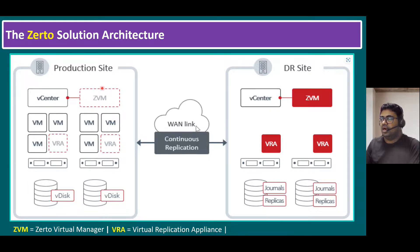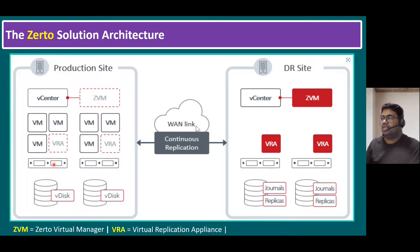The first one is how to install Zerto Virtual Manager on Windows Server. The second one, we talked about the virtual replication appliance — how to install it at a single ESXi host level or at a cluster level across all ESXi hosts. The third session covered how to create a Virtual Protection Group (VPG) on our production site and how to verify replication to the disaster recovery site.